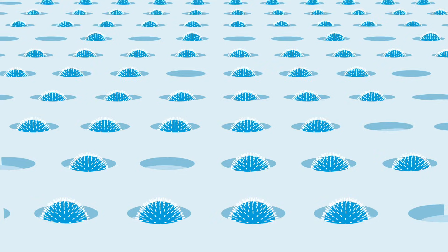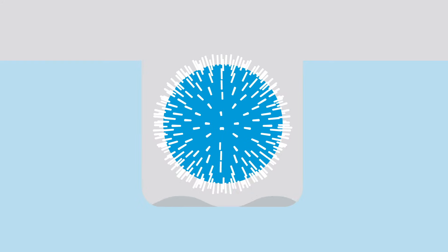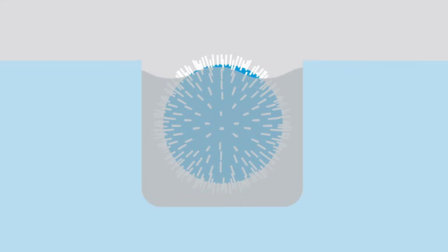These beads then flow across the chip, each depositing into a well. Then the chip is flooded with one of the four DNA nucleotides.